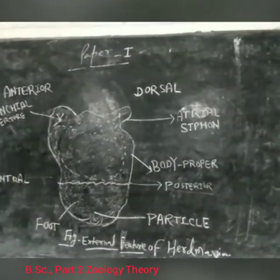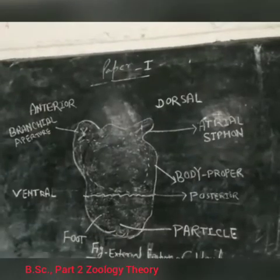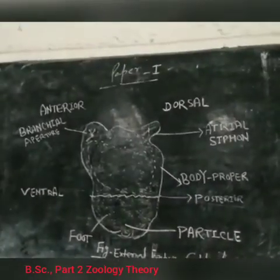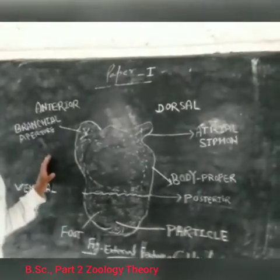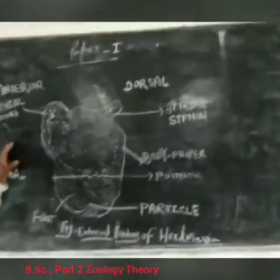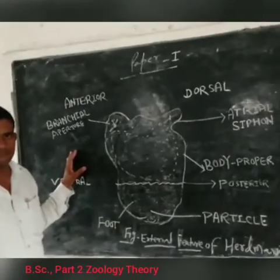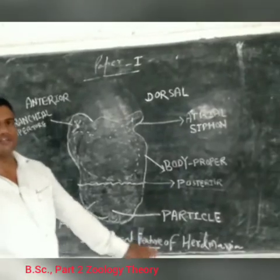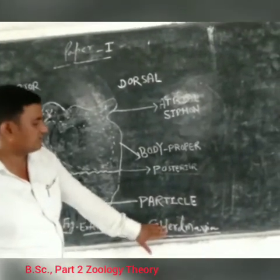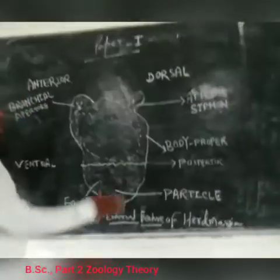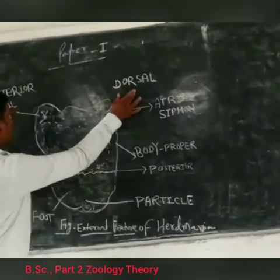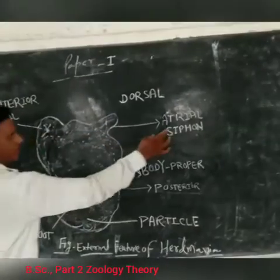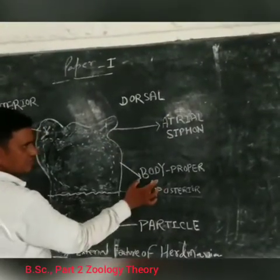This is the basic part of the subject of Herdmania. Today we will study external features of Herdmania. Only one level diagram. This is the bar of Herdmania. This is the level diagram. This is the dorsal and anterior. This is the branch and aperture. This is the body proper.